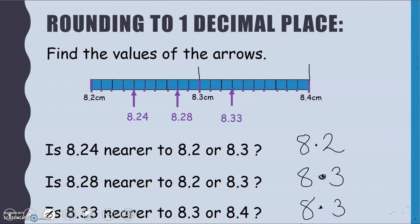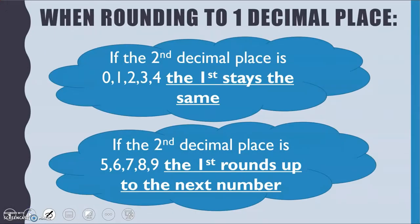So we are just going to use the same rules as last time. And when we are rounding to one decimal place, we are looking at our second decimal place. And that is telling us whether to round up or stay the same. So same rules before. If the second decimal place is 0, 1, 2, 3, or 4, then our first decimal place stays the same. If the second decimal place is 5, 6, 7, 8, 9, then the first decimal place will round up to the next number.